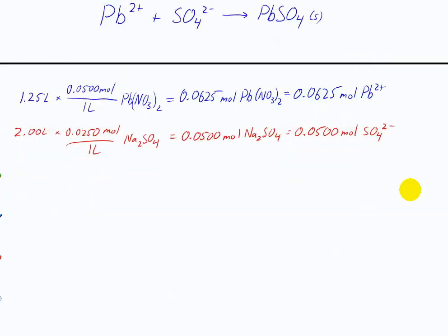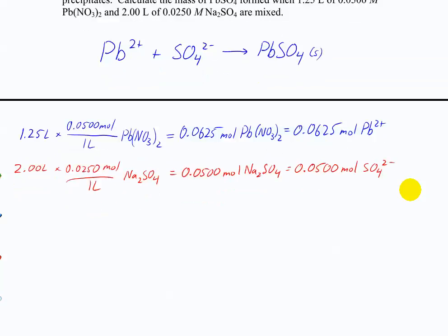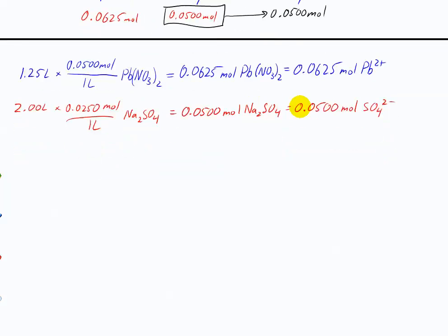To determine the moles of lead sulfate formed, we look at the limiting reactant. We have 0.0625 moles of lead and 0.0500 moles of sulfate in a 1:1 ratio — so sulfate is the limiting reactant. Therefore 0.0500 moles of lead sulfate forms. Converting to grams gives approximately 15 grams of lead sulfate.